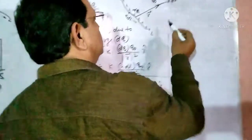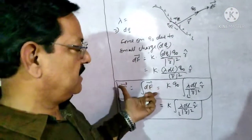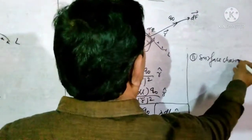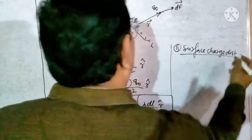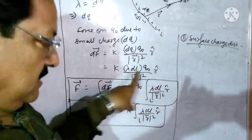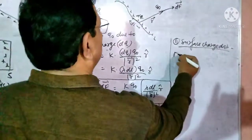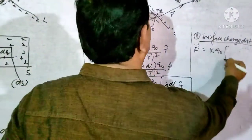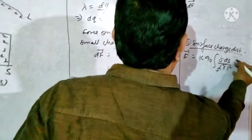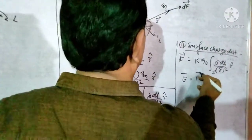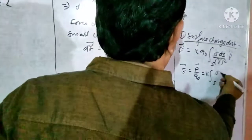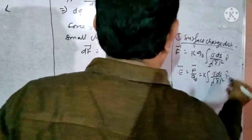For surface charge distribution, replacing lambda · DL with sigma · DS, the force is: F = k · Q-naught · ∫(over S) sigma · DS / |R|² · R-hat. The electric field E equals F divided by Q-naught: E = k · ∫(over S) sigma · DS / |R|² · R-hat. For volume charge distribution, the force is: F = k · Q-naught · ∫(over V) rho · DV / |R|² · R-hat.